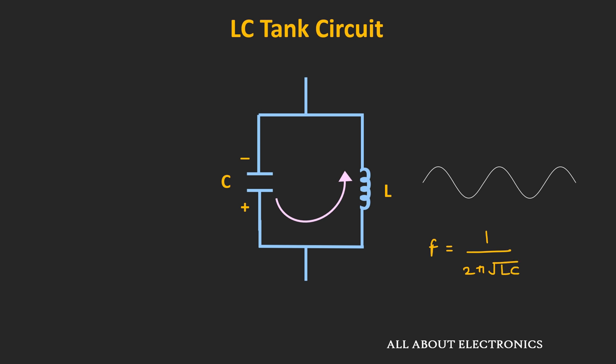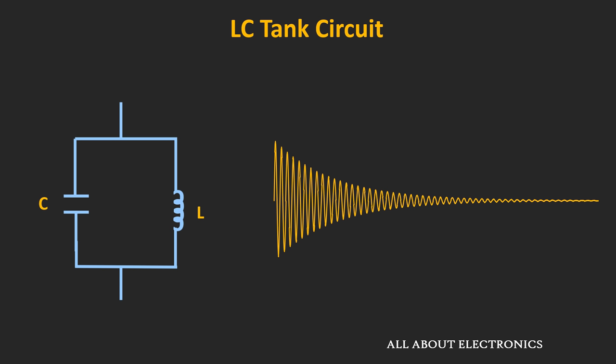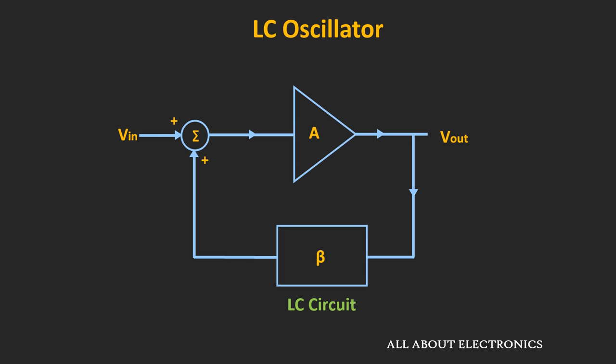So far we have assumed the inductor and capacitor are ideal. But in reality, the inductor has some finite ohmic resistance and the capacitor has some finite leakage current. Because of that, the oscillations will die out over time. To sustain oscillations, we need to provide external energy to the LC tank circuit, and in LC oscillators, this energy is provided through an amplifier circuit.